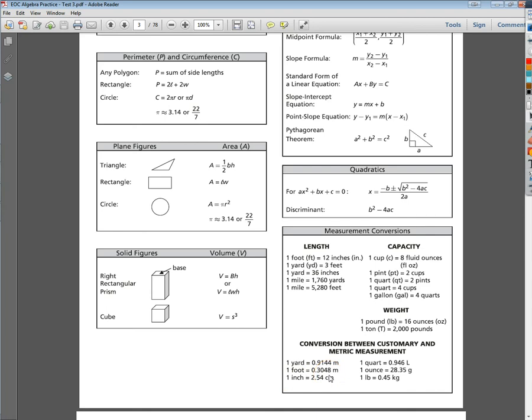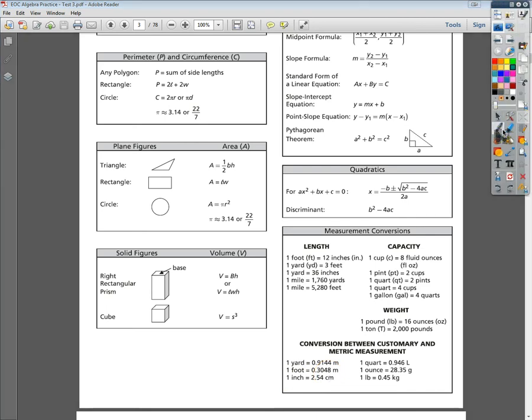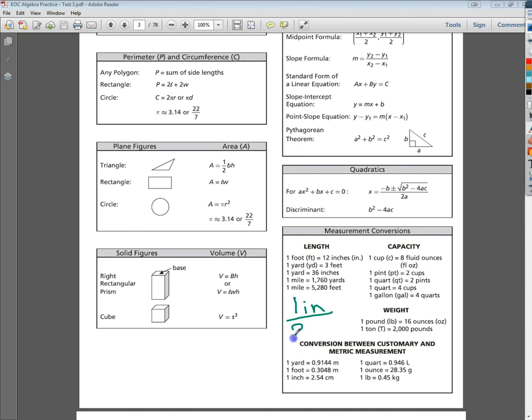It says 1 inch is 2.54 centimeters, so I'm going to write that down. And I'm definitely going to write it down as a ratio. That's a fraction, for those of you scoring at home. So 1 inch is 2.54 centimeters. This will come in super handy at one point, and that point is right now.